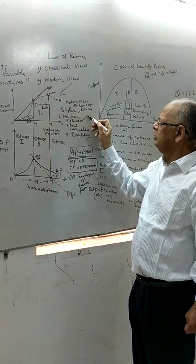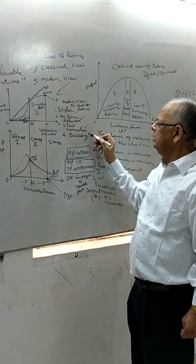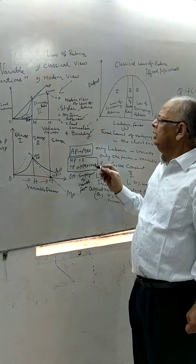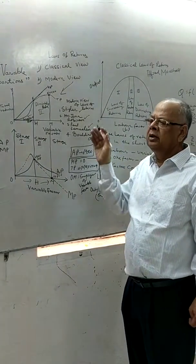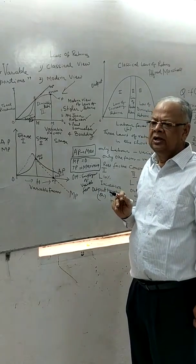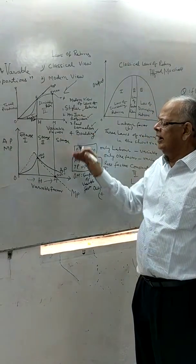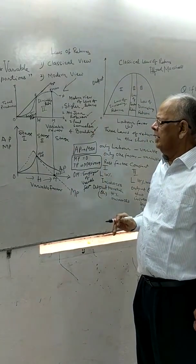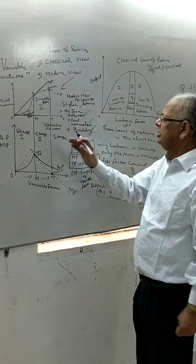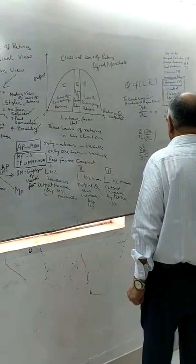Economists such as Stigler, Joan Robinson, Paul Samuelson, and Boulding — all great economists — present this diagram in their books, and its mathematical exposition is also available.